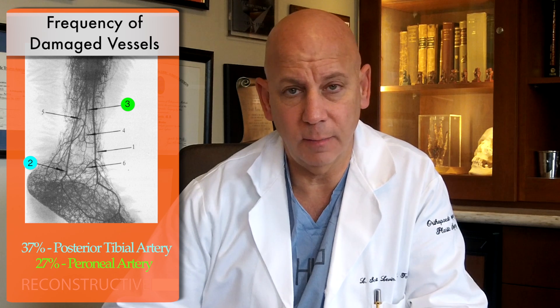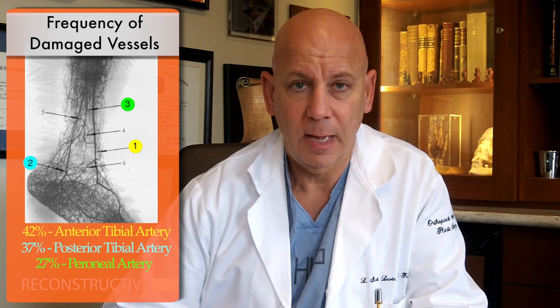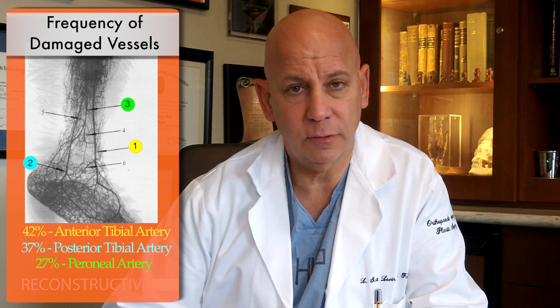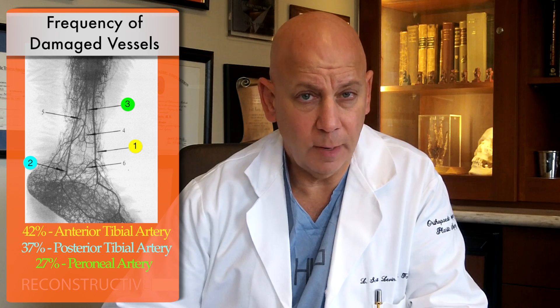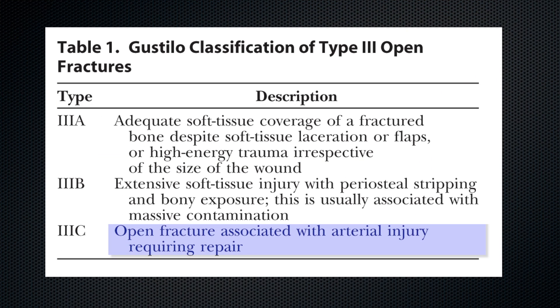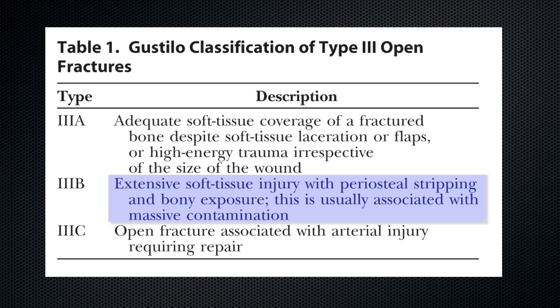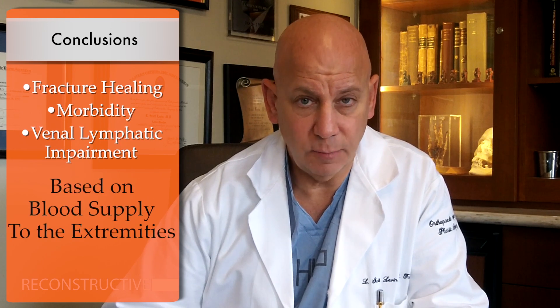The authors looked at the frequency of vessels that were damaged, with the anterior tibial artery being the most commonly injured vessel in their series, trying to answer the question of whether extremity vascularity is important. Certainly, the original Castillo-Anderson description indicates that a 3C injury requires revascularization for survival, and a 3B injury with significant soft tissue and periosteal stripping is defined, but the 3B itself doesn't specify whether there's a one-vessel leg, a two-vessel leg, or all three vessels intact. We know that fracture healing, morbidity, and venolymphatic impairment is based on blood supply to the extremity.